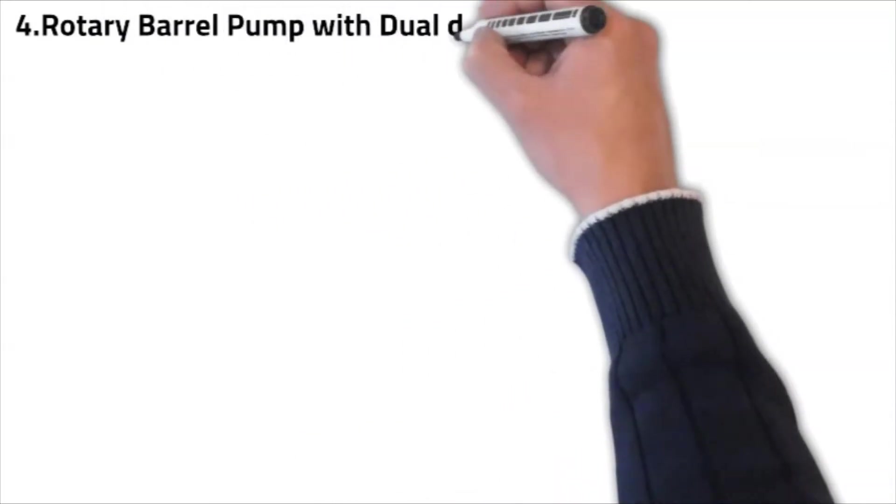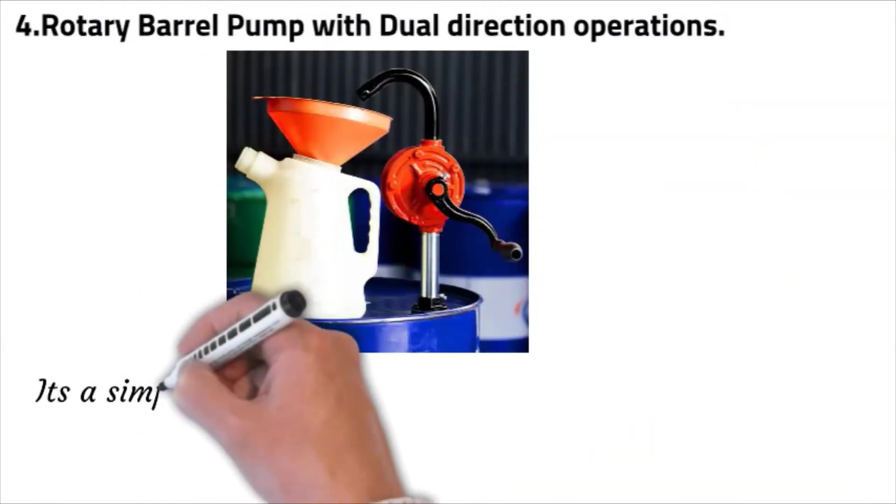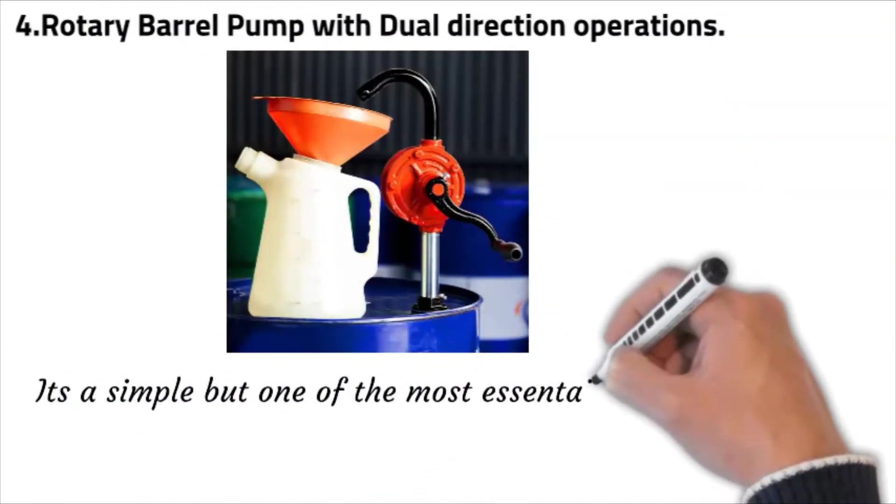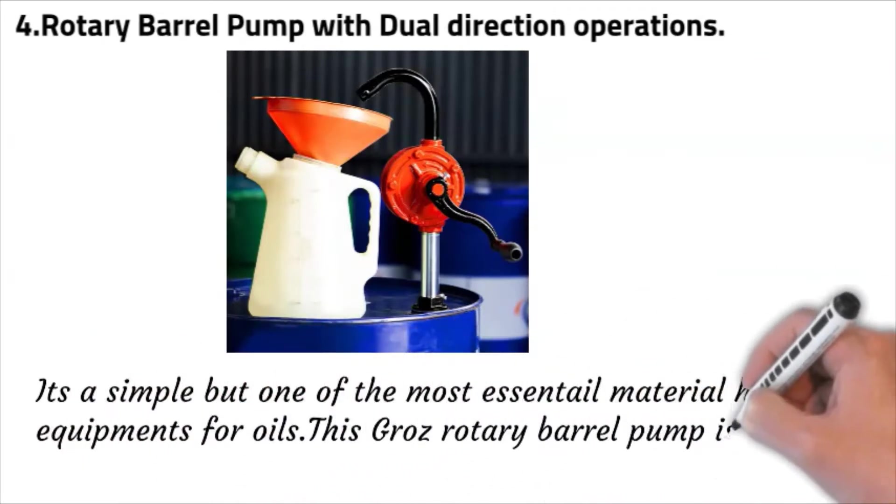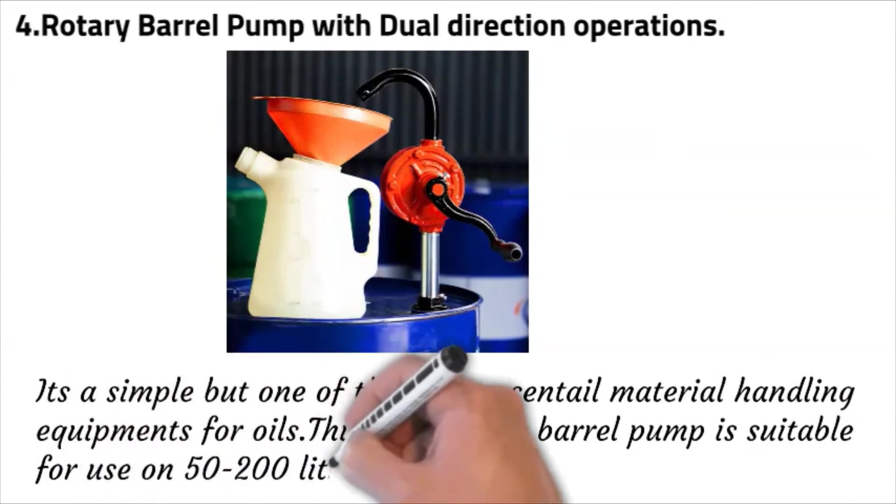Number four, rotary barrel pump with dual direction operations. It is a simple yet one of the most essential material handling equipment for oil. This rotary barrel pump is suitable for use on 50 to 200 liter drums.